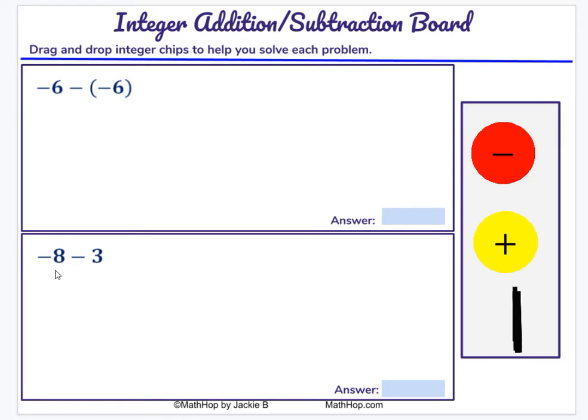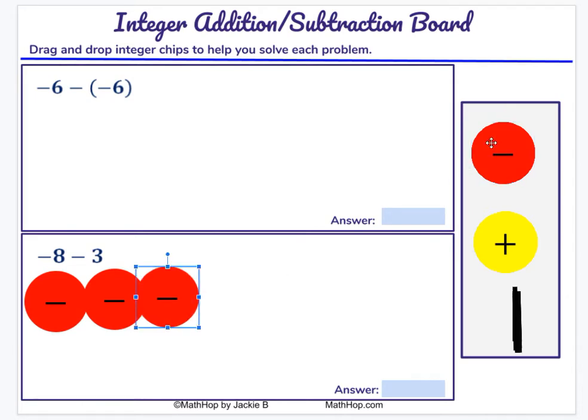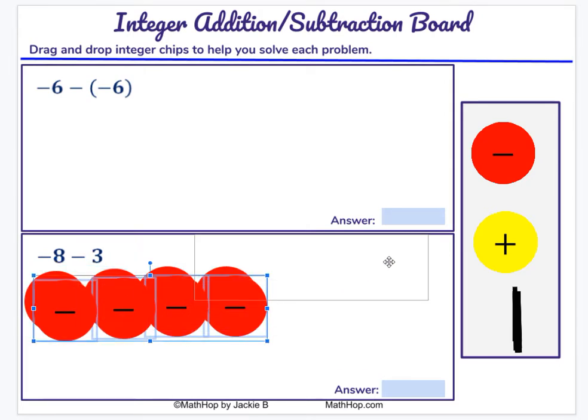They are going to say I'm starting with negative eight, so they will bring eight negative chips over to their board. Doesn't matter how neatly they do it or how sloppy it is. I try to be neat, I'm not always neat. And then I'm going to copy these four, control C and V, and make eight much more quickly, which they will probably do as well.